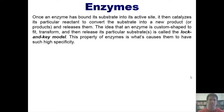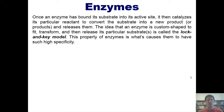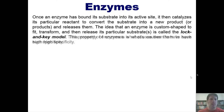Once an enzyme has bound its substrate into its active site, it then catalyzes its particular reactant to convert that substrate into a new product, or products, and then releases them. The idea that an enzyme is custom shaped to fit, transform, and then release its particular substrates is called the lock and key model. This property of enzymes is what causes them to have such high specificity.